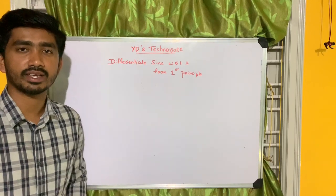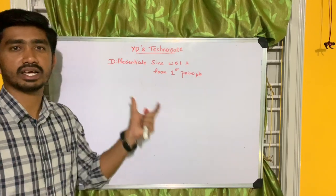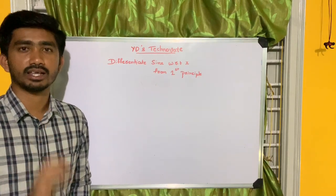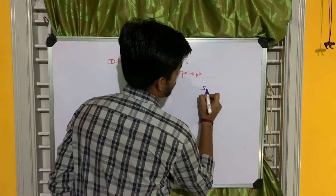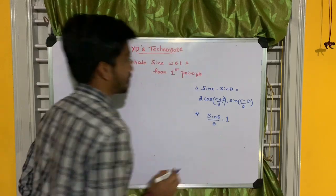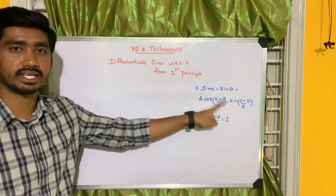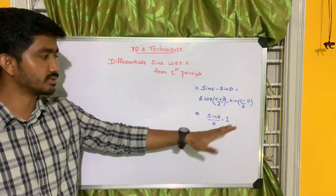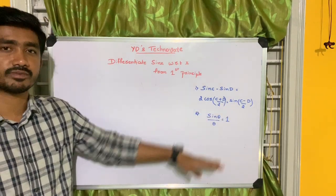Before I start deriving, one should know two important formulas which are used when differentiating sine x with respect to x from first principle. Those two are: sine c minus sine d is equal to 2 cos of (c plus d) by 2 into sine of (c minus d) by 2. And one more relation: sine theta by theta is equal to 1.